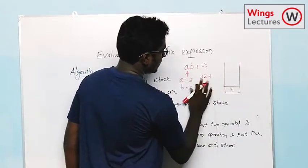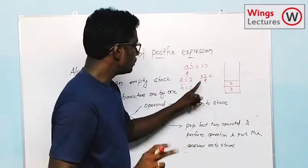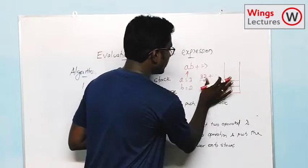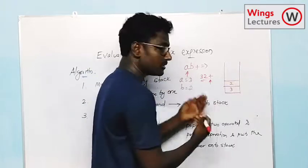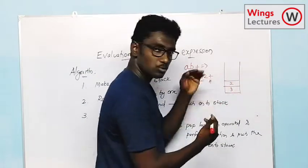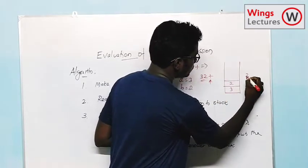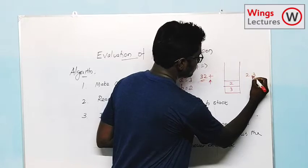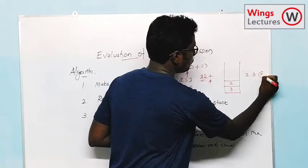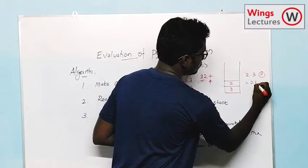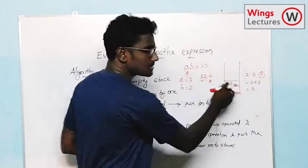And then next, read 2. Now I have two operands. Then the incoming character is an operator. So what I have to do? I have to take the last two elements from the stack. Here I have only two elements, so I am going to take 2 and 3. What is the operation? Addition. So I have to perform addition — 2 plus 3 is 5.